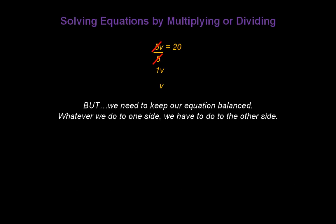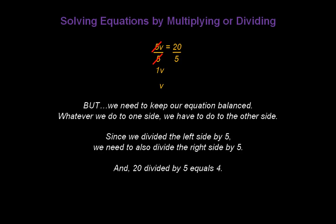But remember, we need to keep our equation balanced. Whatever we do to one side, we have to do to the other side. And since we divided the left side by 5, we need to also divide the right side by 5. So let's put 20 divided by 5 on the right-hand side. And 20 divided by 5 equals 4. And so v equals 4 is our answer.